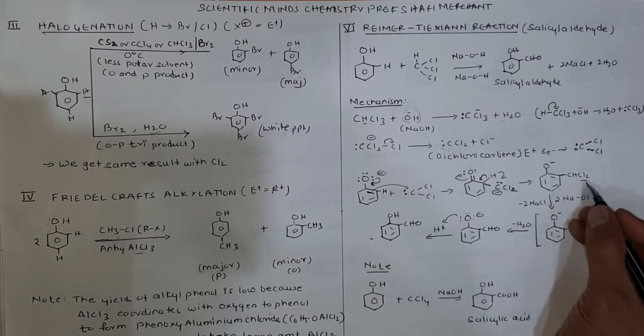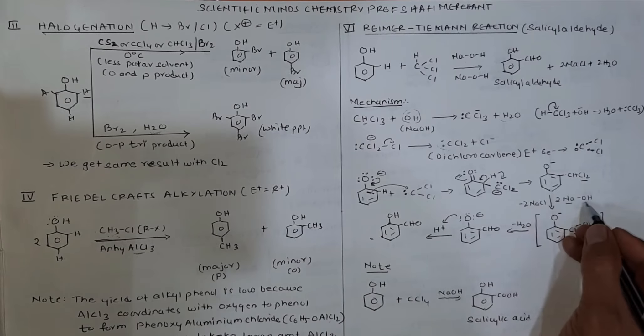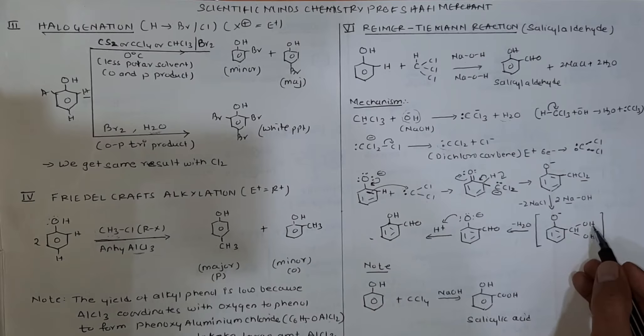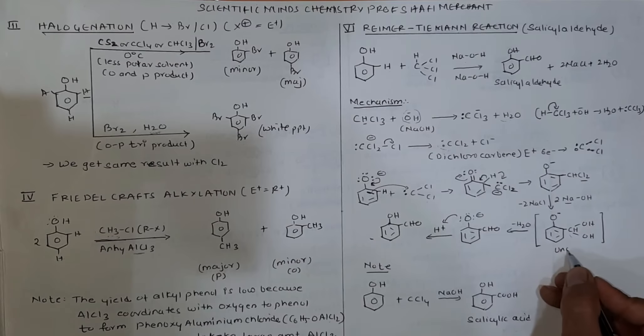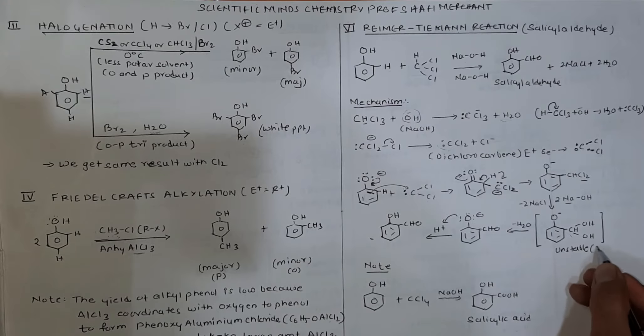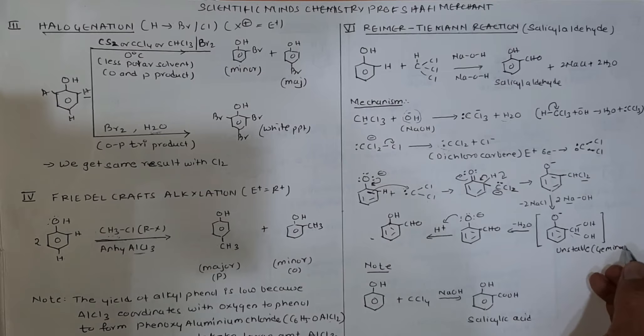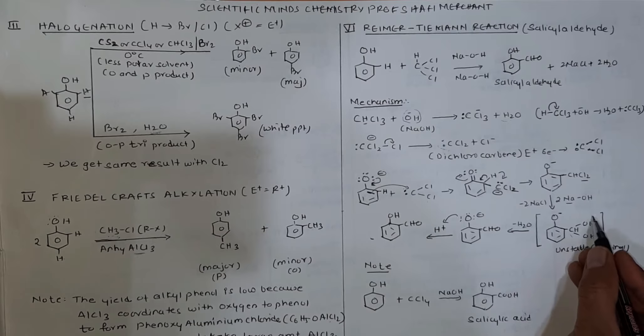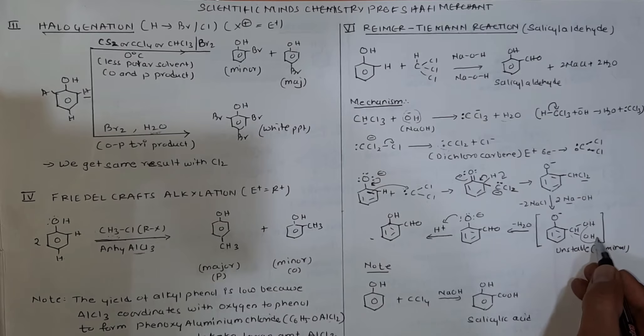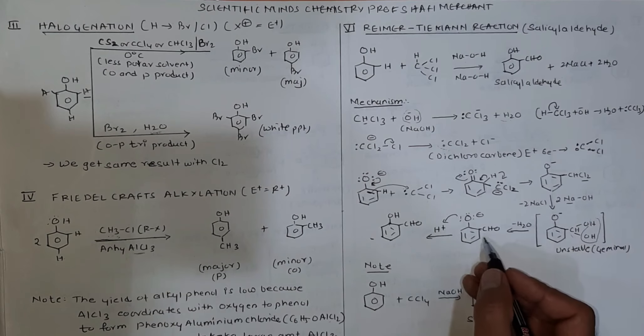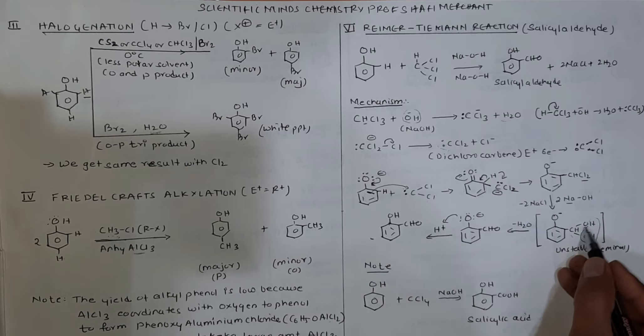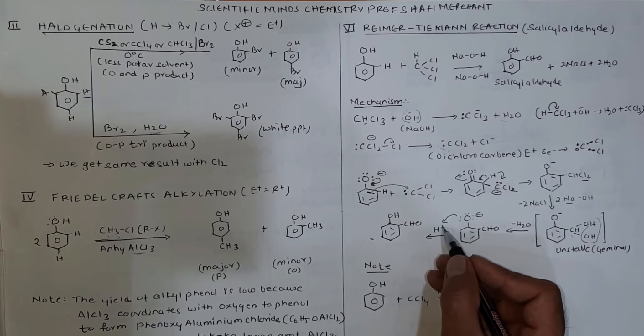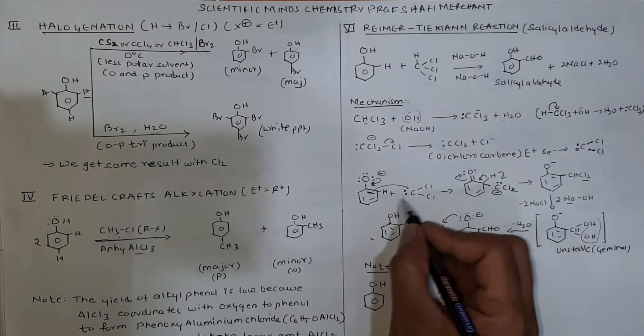When you do hydrolysis, both chlorines are replaced by OH to form a diol. Remember, geminal diol is unstable. Spontaneously, it loses one water molecule to form CHO aldehyde. Then phenoxide takes H+ back to form salicylaldehyde.